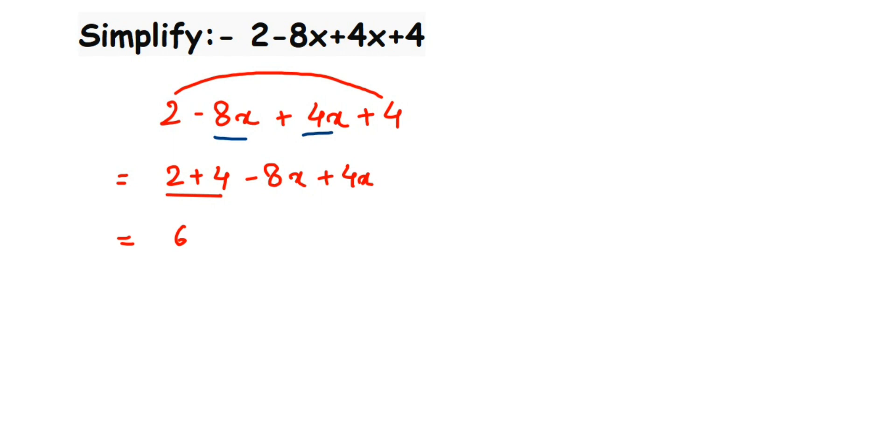One is negative and one is positive. When you have different signs, you have to subtract them. So 8 - 4, if I subtract them, 8 - 4 will be 4, and you have to put the sign of the number which is greater. So 8 is greater, its sign is minus, so we're going to put -4x. That's it! So 6 - 4x is the answer.